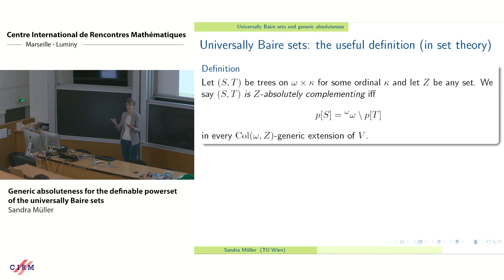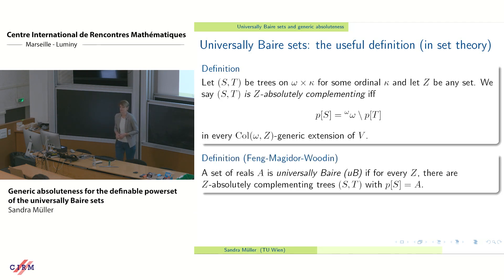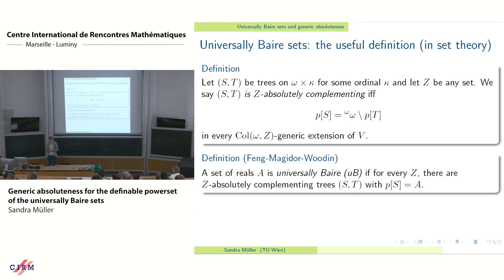What is a universally Baire set? I'm talking to a set theory audience so I won't go through the topological definition — let's start with what I call the useful definition. Whenever we have two trees S and T we say they are absolutely complementing if the projections of the trees are complements of each other in every generic extension — in every Col(ω, Z) generic extension. As proved by Feng, Magidor, and Woodin, you can use this to characterize universally Baire sets: a set of reals A is universally Baire if for every set Z it's the projection of a Z-absolutely complementing tree that has a complement.